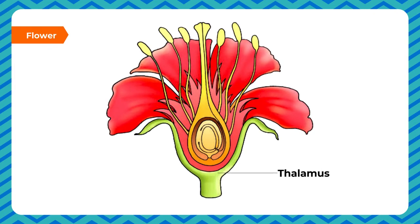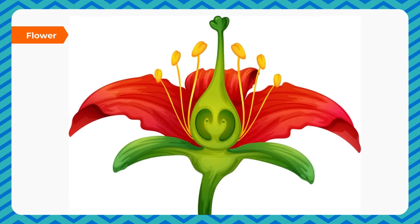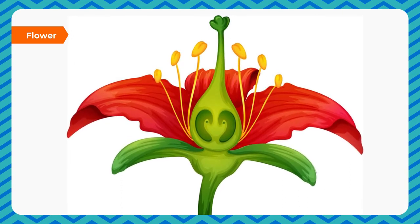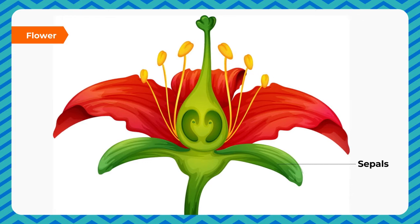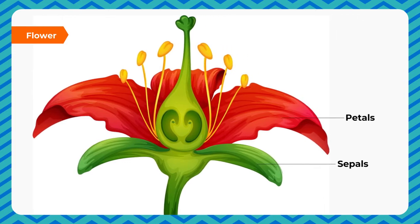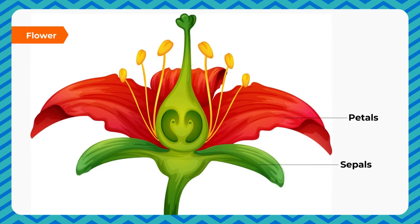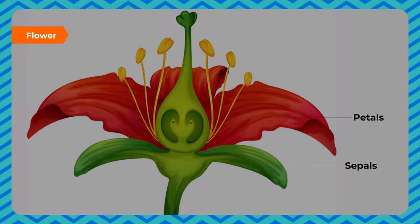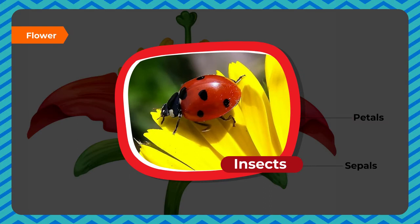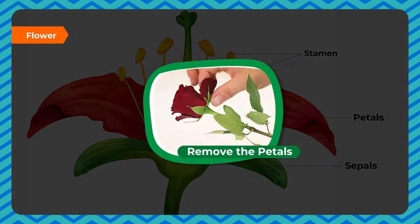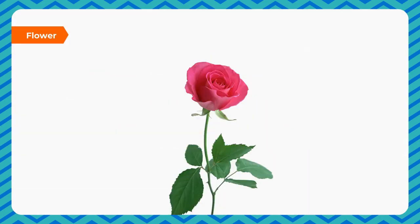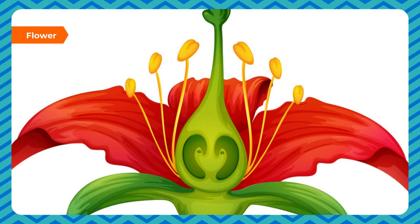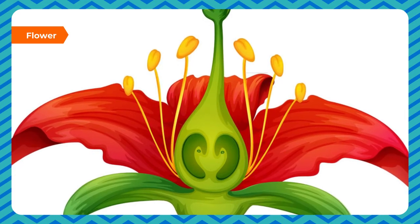The outermost whorl consists of green leaf-like structures called sepals, which protect the flower when it is still a bud. Petals are next to the sepals, generally with bright colors and scent to attract insects that help in pollination. The stamens can be seen as we remove the petals. Stamens are the male parts of the flower. Each stamen consists of a thin stalk called the filament, with a bag-like head called the anther — pollen grains are contained in the anther.